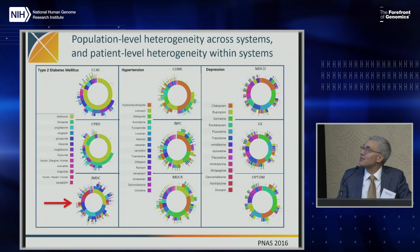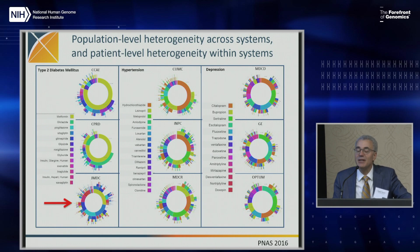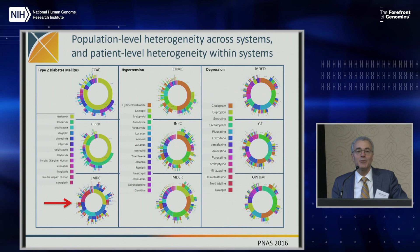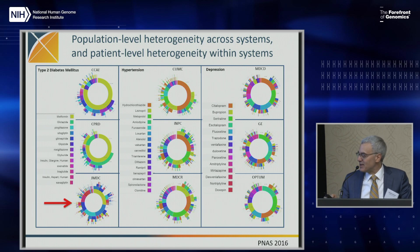Our first large-scale study was actually that first one — tallying or counting things. We asked, as a test case for three diseases — diabetes, hypertension, and depression — how is that treated around the world? We know what the guidelines are, but what are people actually doing? We did 240 million patients from around the world, 12 databases. In this slide we show only three databases for each disease for illustration. The inner circle is the first drug, second drug, third drug on your way out from the circles.